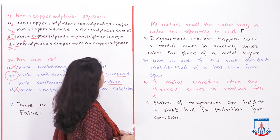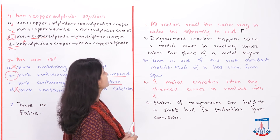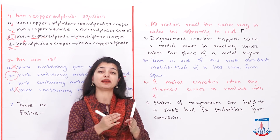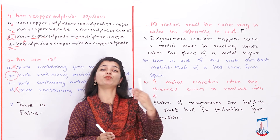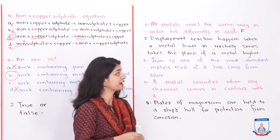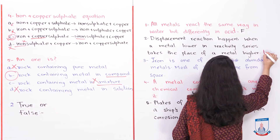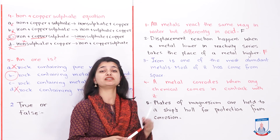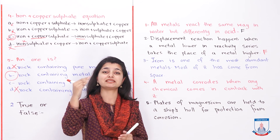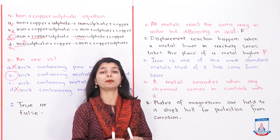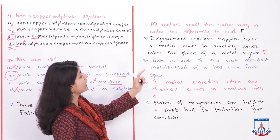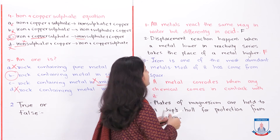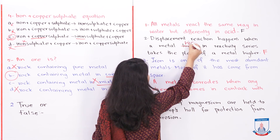Second statement: 'Displacement reaction happens when a metal lower in the reactivity series takes the place of a metal higher in the reactivity series.' This is false. The correct statement is: displacement reaction happens when a metal higher in the reactivity series takes the place of a metal lower in the reactivity series. The words 'higher' and 'lower' are swapped in the original statement.